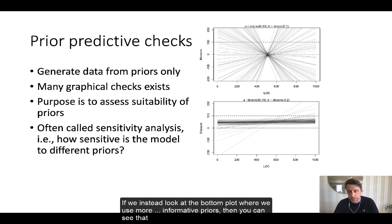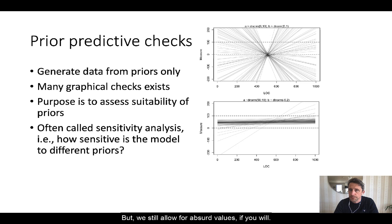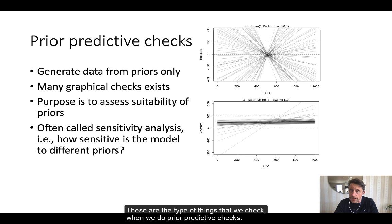If we instead look at the bottom plot, where we use more informative priors, then you could see that we have the absolute majority of our probability mass between those two dashed lines. But we still allow for absurd values, if you will. So these are the type of things that we check when we do prior predictive checks.